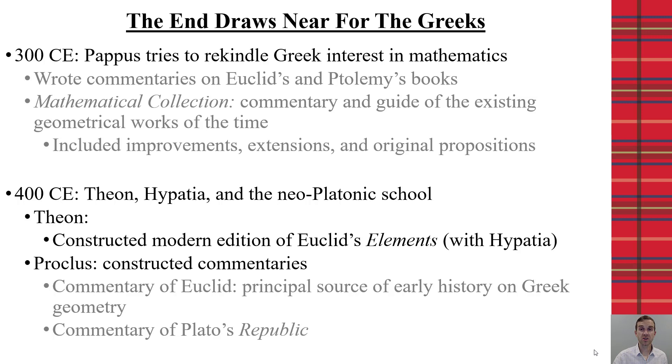Additionally, Proclus constructed many different commentaries, which helped us, again, get back to some of those works that maybe the originals are not there, but we could use and understand what was going on at that time. For example, he created other commentaries on Euclid as well as commentaries on Plato's Republic.